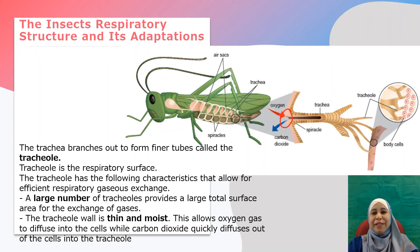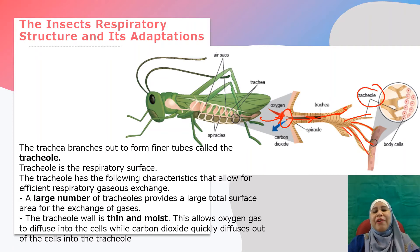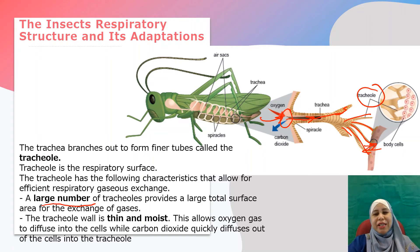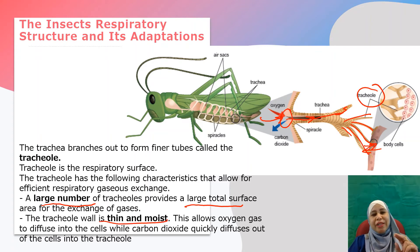You can see the opening here — that is the spiracle. Oxygen will diffuse from outside into the tracheal system. The trachea branches into what we call tracheoles, which are the respiratory surface, meaning gases will diffuse into the body cells through the tracheoles. There are a few adaptations at the tracheoles to ensure efficient gaseous exchange. First, there are a large number of tracheoles to ensure a large total surface area. Second, the tracheole wall is thin and moist — moist so that gases dissolve easily, and thin so that gases can diffuse in and out easily.